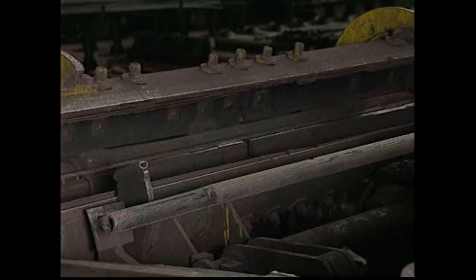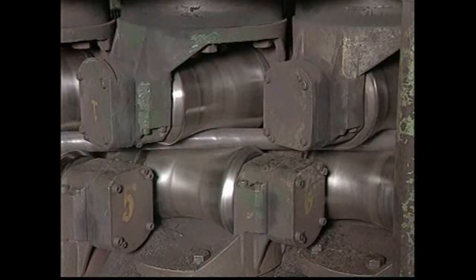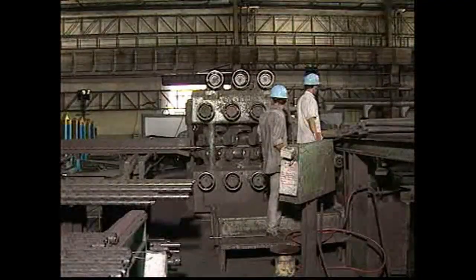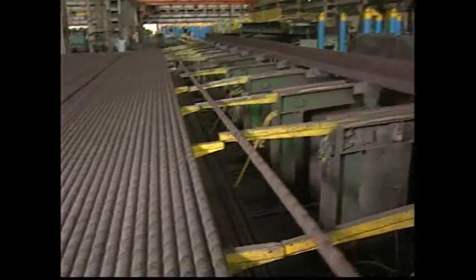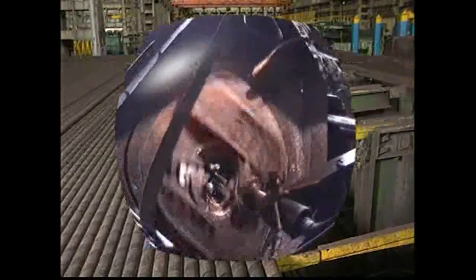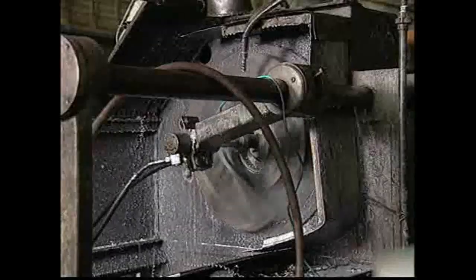Tubes after heat treatment are passed through a specially designed straightening machine. A double head cut-off machine removes the tail ends.